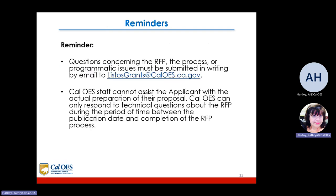Reminder: questions concerning the RFP, the process, or programmatic issues must be submitted in writing by email to listosgrants@caloes.ca.gov. Cal OES staff cannot assist the applicant with the actual preparation of their proposal. Cal OES can only respond to technical questions about the RFP during the period of time between the publication date and the completion of the RFP process.